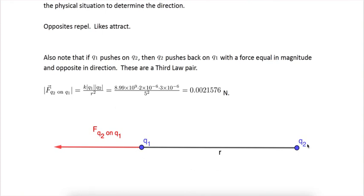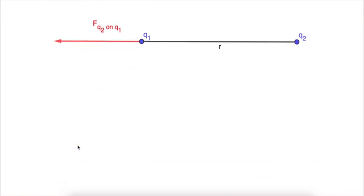Okay, and then of course, if Q1's pushing on Q2, then Q2 is pushing back on Q1. This is a third law pair. Every action has an equal and opposite reaction. These guys are pushing on each other. So we could just, it's the same formula. We get the same magnitude, but the direction's going to be the opposite. It'll push, Q1 will be pushed to the left. Thank you.